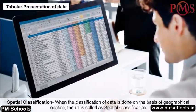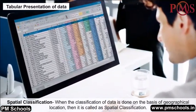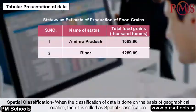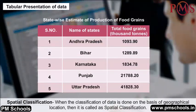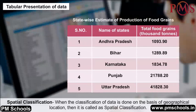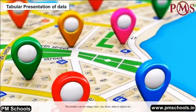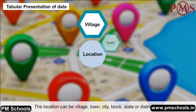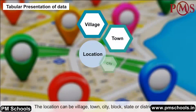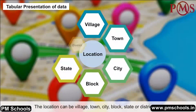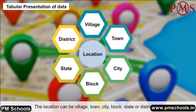Spatial classification: When the classification of data is done on the basis of geographical location, it is called spatial classification. The location can be village, town, city, block, state, or district, etc.